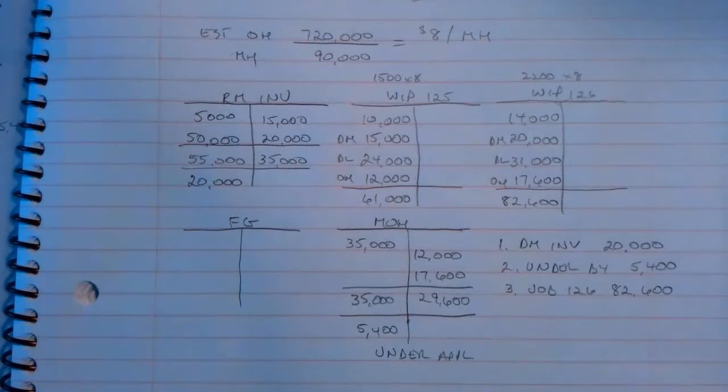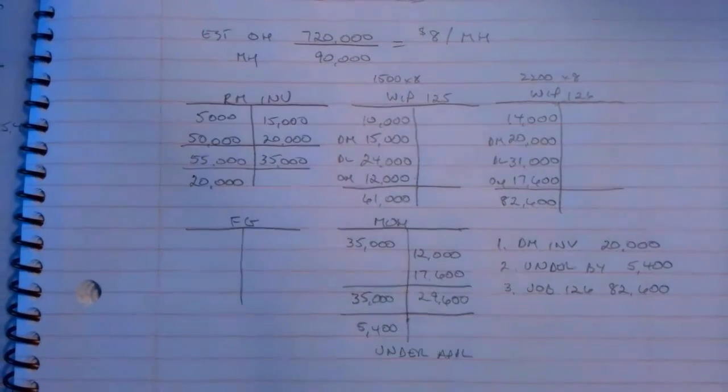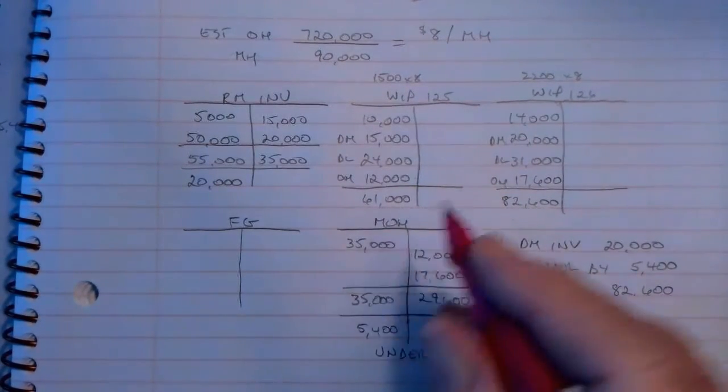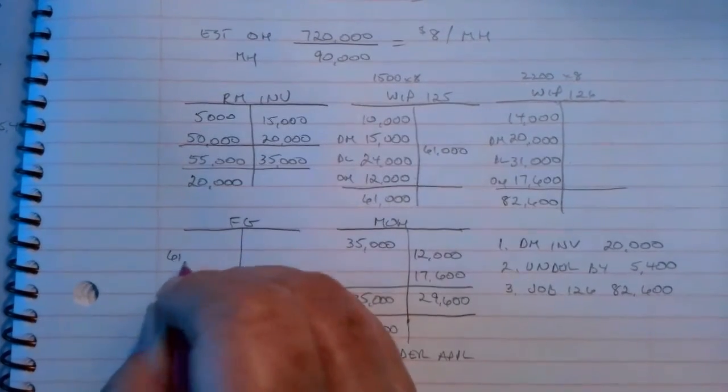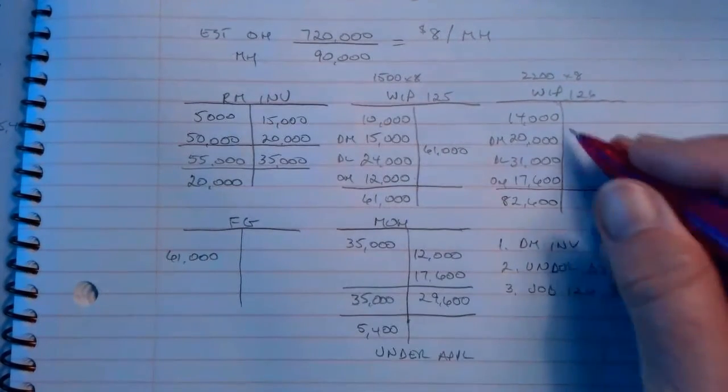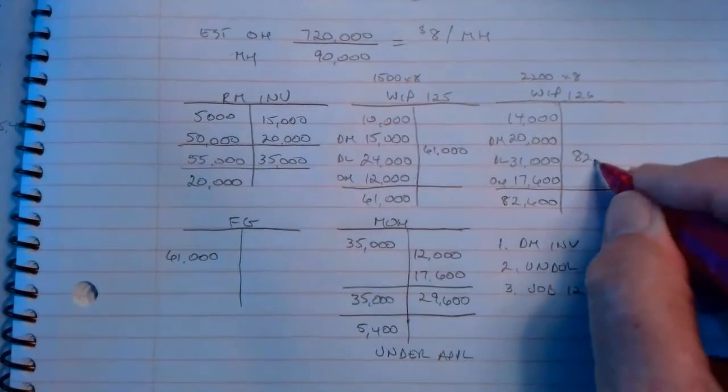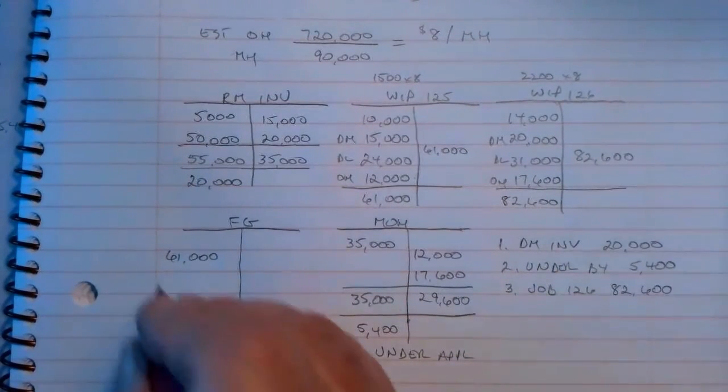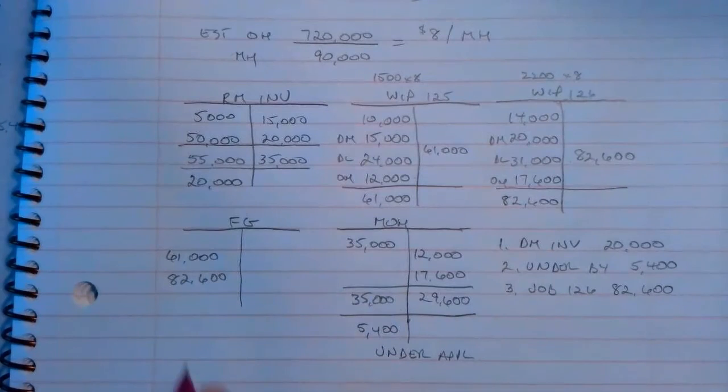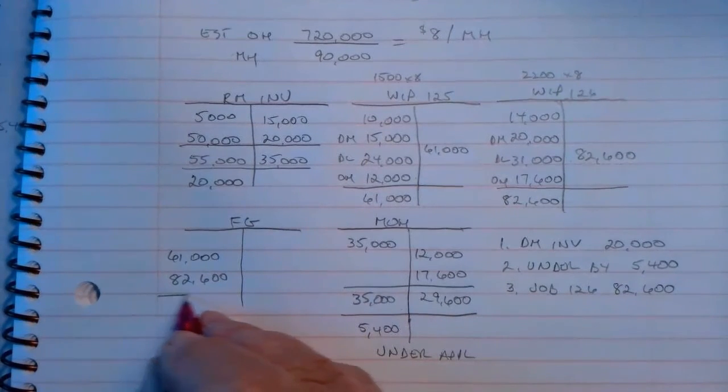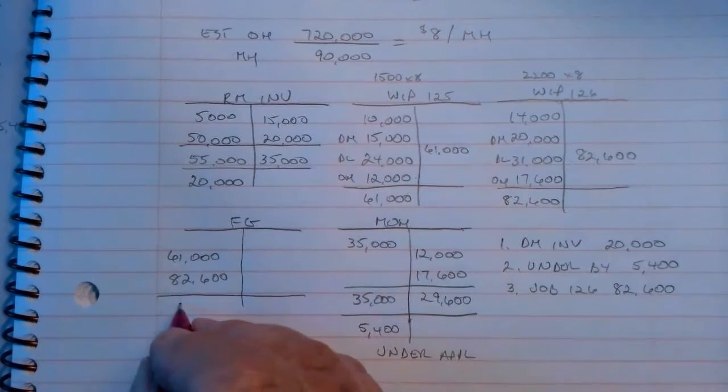Next, assume 125 and 126 were finished this period. What's the cost of goods manufactured? We don't have a beginning finished goods inventory, but when these were done, $61,000 would come out and go into finished goods, and $82,600 would come out of work in process and go into finished goods. So finished goods would have a total of $93,600 here.